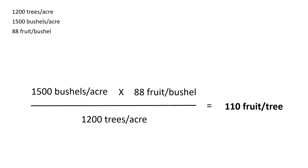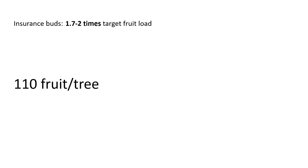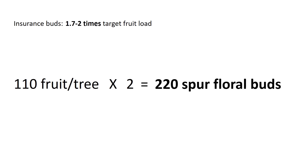Factor in some insurance buds in case some are lost due to poor fruit set, spring frost, or another event. We recommend leaving about 1.7 to 2 times the target fruit load. So if you multiply the 110 by 2, you get 220. This is the number of spur or floral buds to leave on the tree — these buds will then develop into fruit.